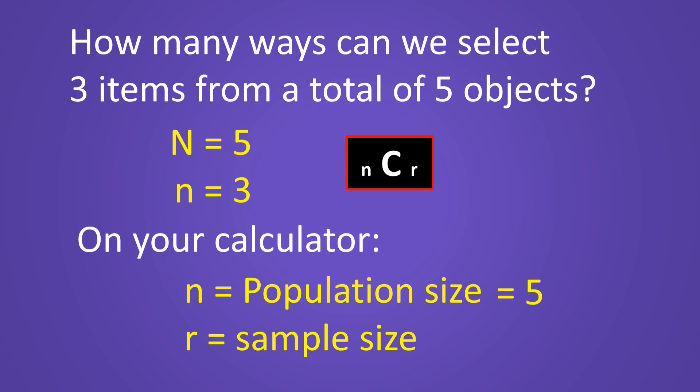So if we are selecting three items from five objects, then r, our sample size, is equal to three. On the calculator, it would look like this: five, then a C for combination, and then a three. That means out of a population of five, how many different combinations do we get if we select three items?